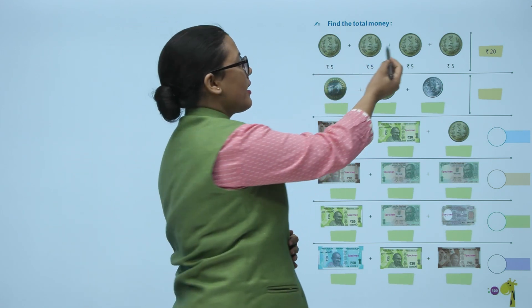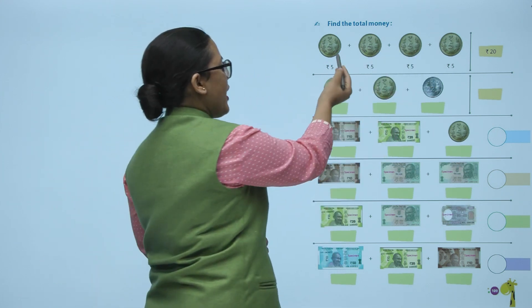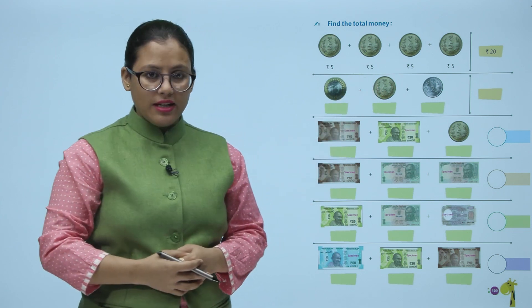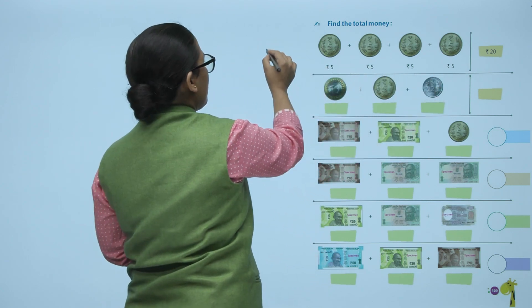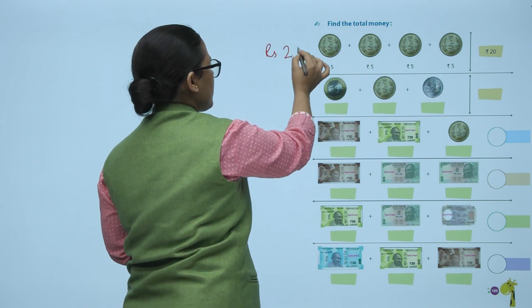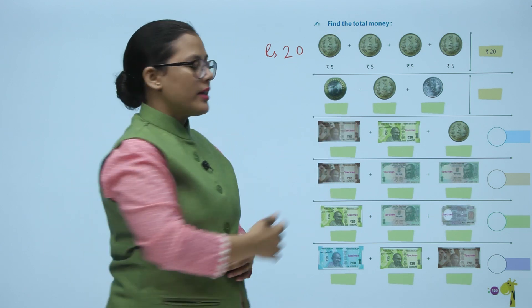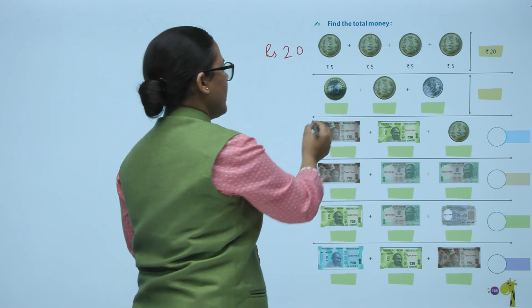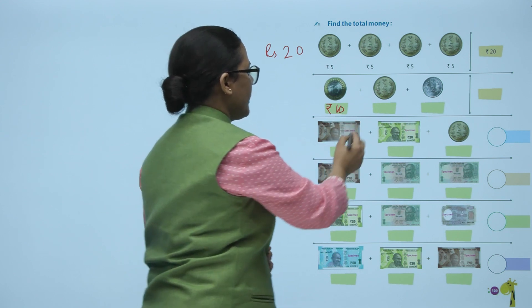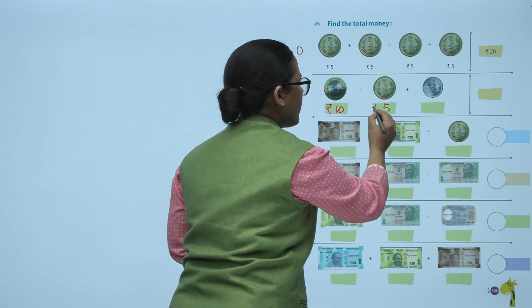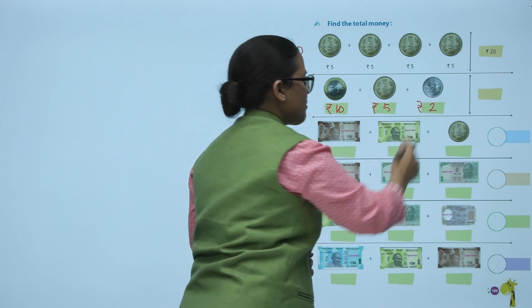Then again a 5-rupee coin, and then another 5-rupee coin. Then a 10-rupee coin, then a 5-rupee coin, and then a 2-rupee coin. So you have to add them all up.